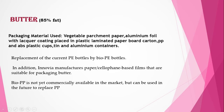Butter is usually 85% fat and is packed using either vegetable parchment paper, aluminum foil with lacquer coating placed in plastic-laminated paperboard cartons. Polypropylene and ABS plastic cups can also be used, as well as tin and aluminum containers. Bio-PE bottles are being explored as a replacement for current polyethylene bottles. Inovia manufactures paper-cellophane based films suitable for packaging of butter. Bio-PP is not yet commercially available but could replace polypropylene in the future.